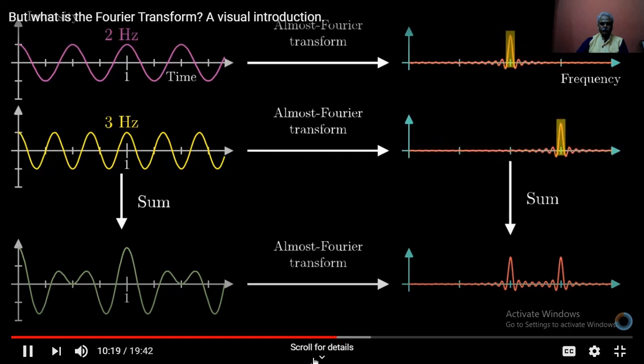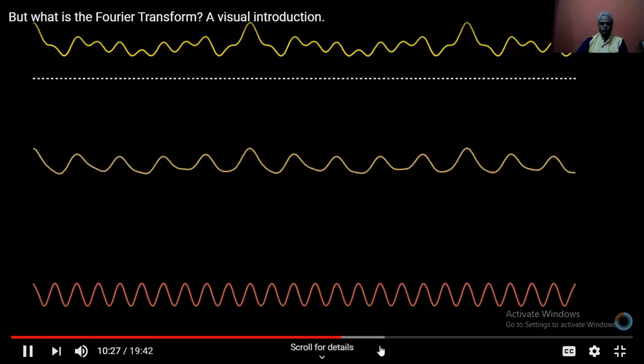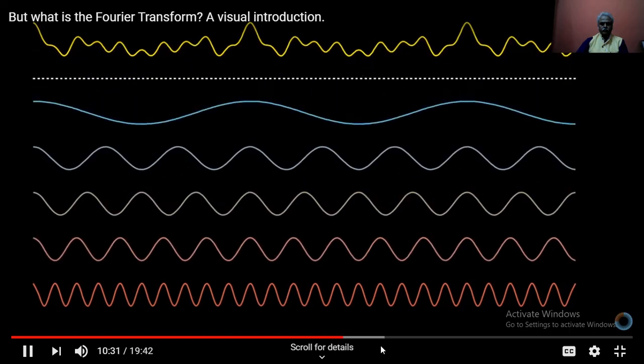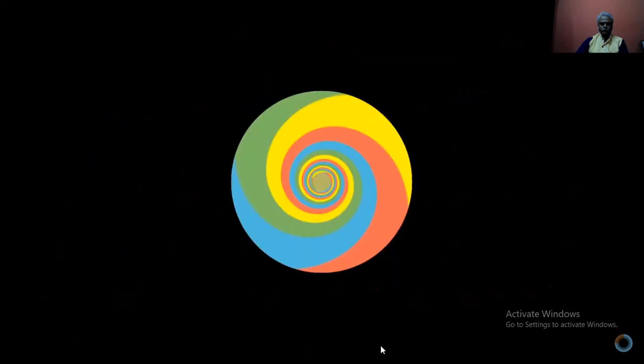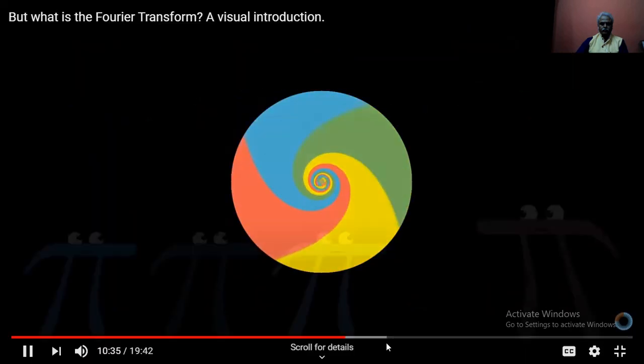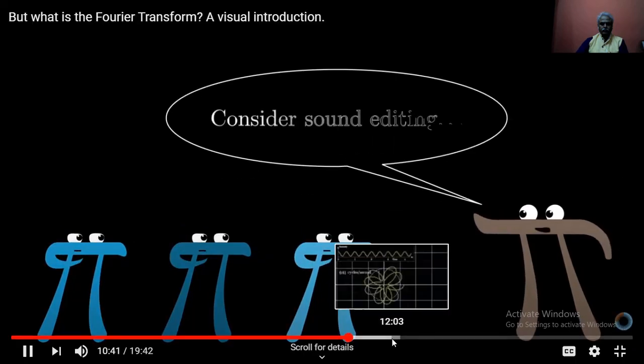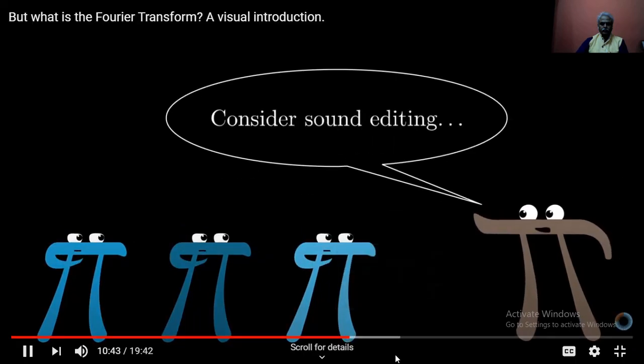So when you add together two pure frequencies, the transform graph just has these little peaks above the frequencies that went into it. So this little mathematical machine does exactly what we wanted: it pulls out the original frequencies from their jumbled up sums, unmixing the mixed bucket of paint. And before continuing into the full math that describes this operation, let's just get a quick glimpse of one context where this thing is useful: sound editing.